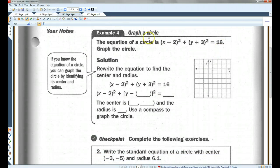Okay, the equation of a circle is (x - 2)² + (y + 3)² = 16. Graph the circle. So I'm going to rewrite the equation to find the center and the radius. y plus 3 is like y minus negative 3, and this is like 4 squared. So the center is (2, -3), and the radius is 4.